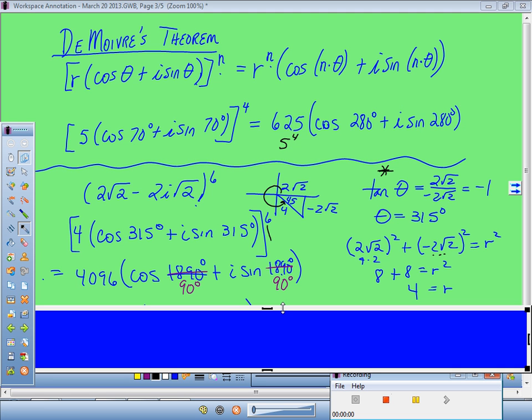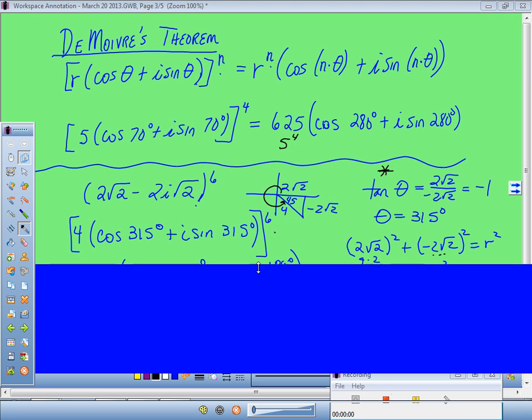This is typically where students stall if they have trouble with this problem. They're like, oh, I just did all this, now why was I turning it into polar form? Well, the whole idea was so you could take it to the 6th power. So we are looking here to take our number now in polar form, 4 cosine 315 plus i sine 315, and take it to the 6th power.